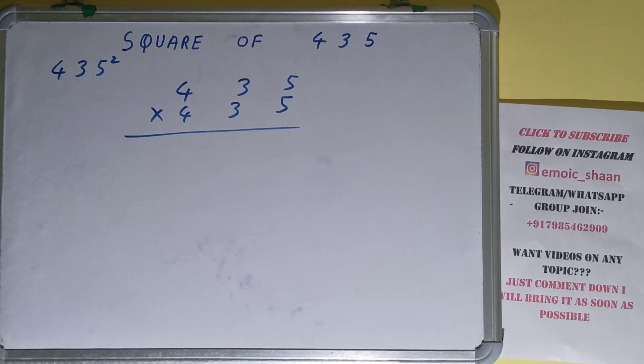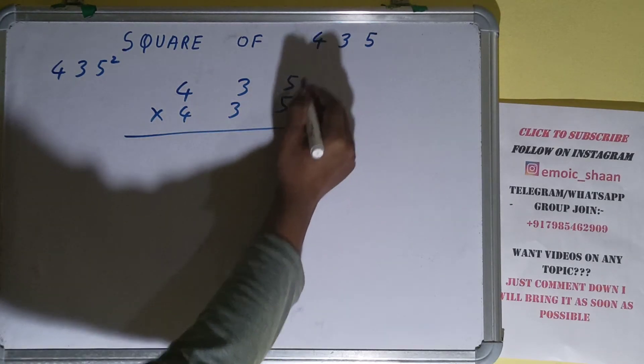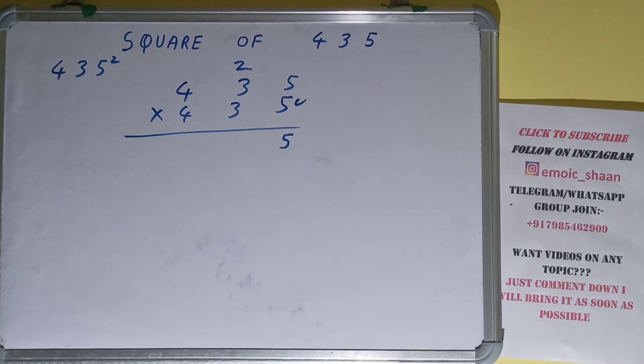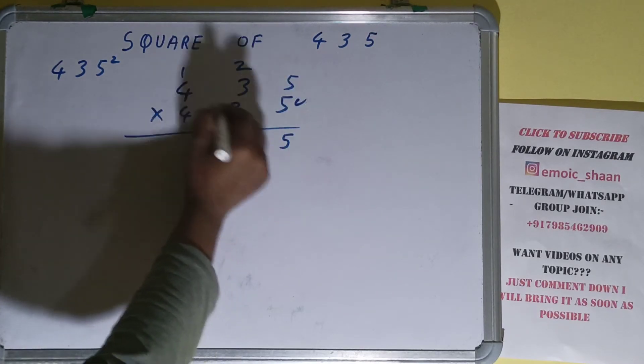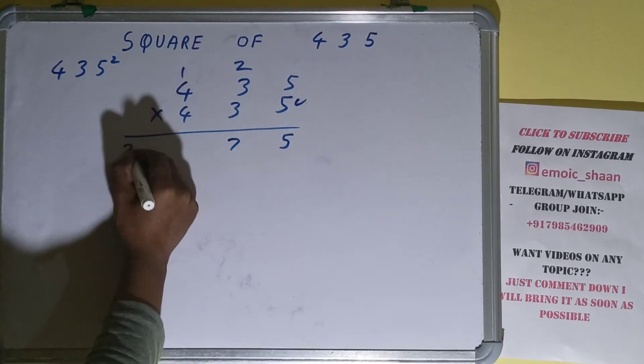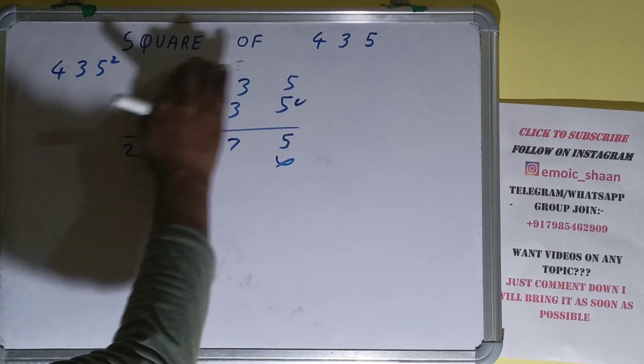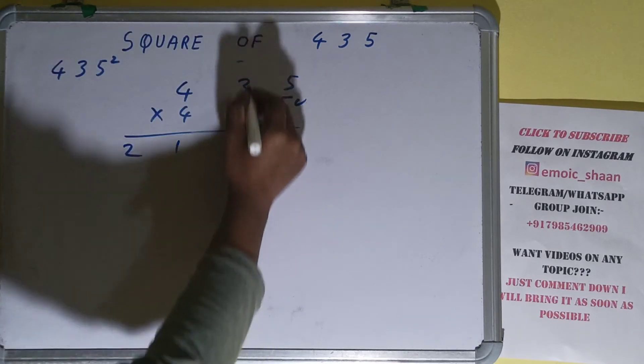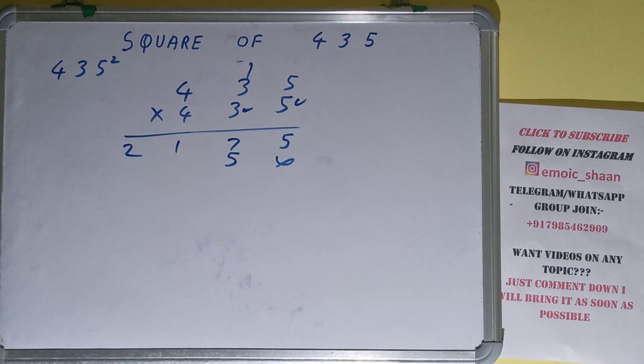Let's start with this. 5 times 5 is 25, 2 carry. 5 times 3 is 15 plus 2 is 17, 1 carry. 5 times 4 is 20 plus 1 is 21. Now this 3: 5 times 3 is 15, 1 carry. 3 times 3 is 9 plus 1 is 10, 1 carry. 3 times 4 is 12 plus 1 is 13.